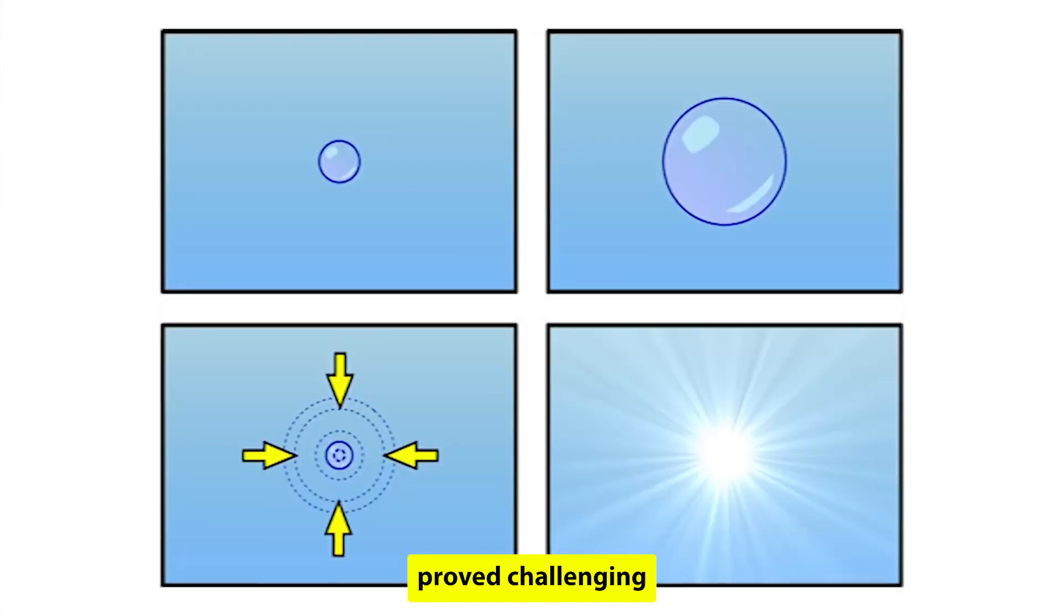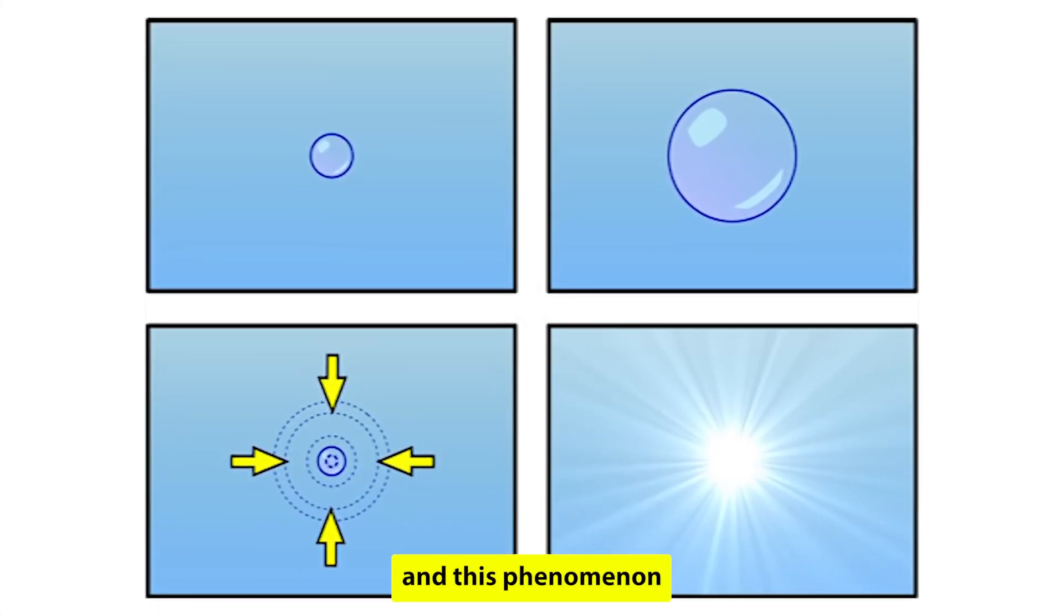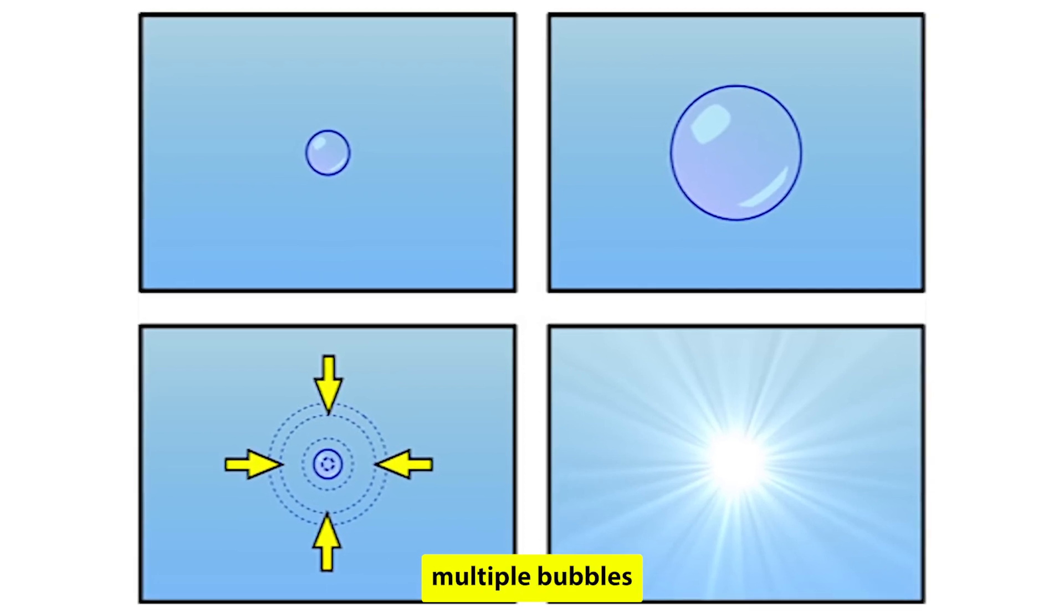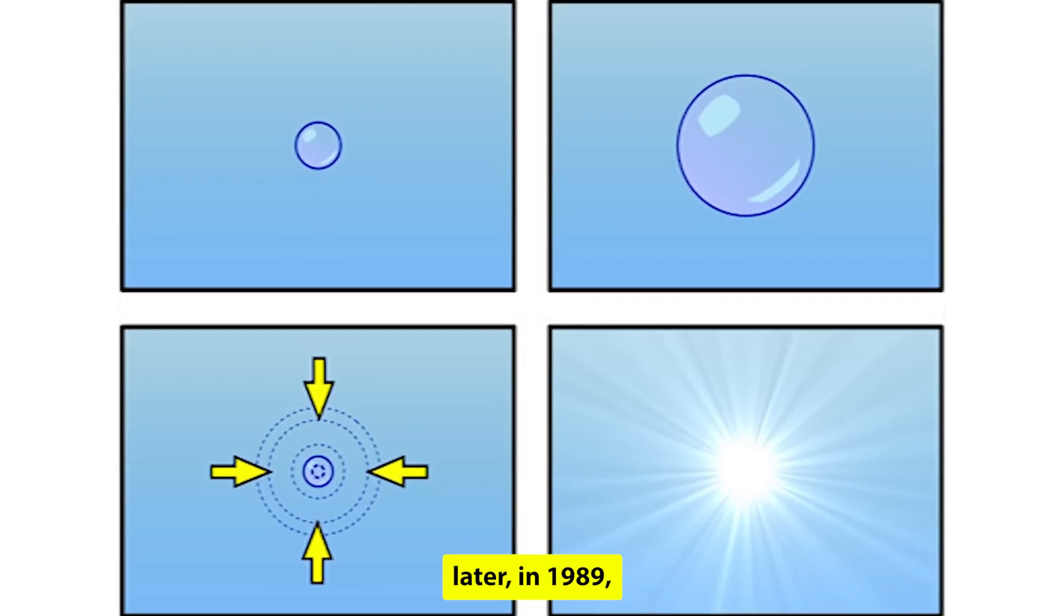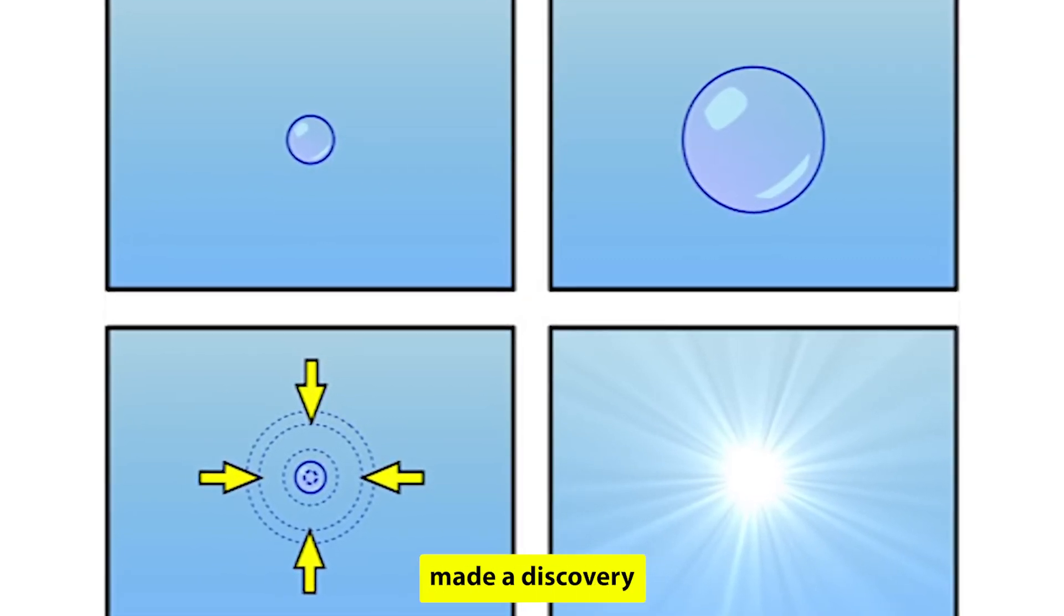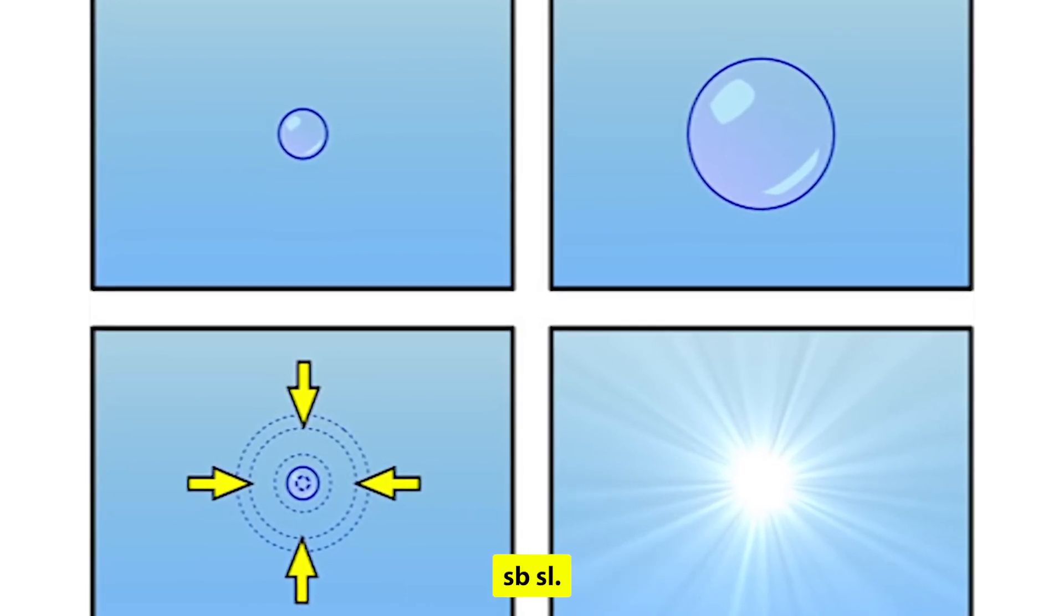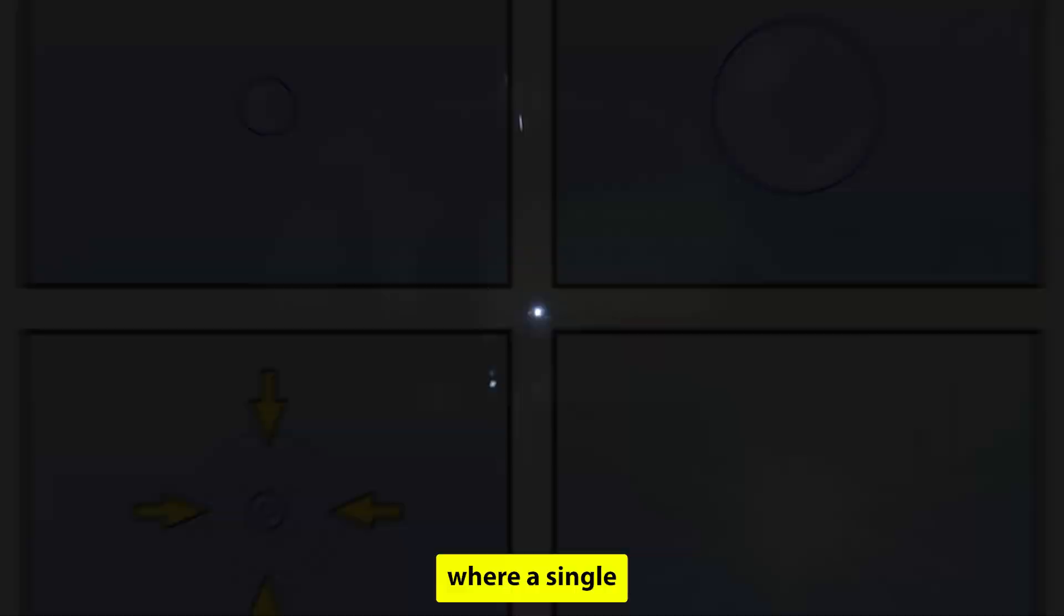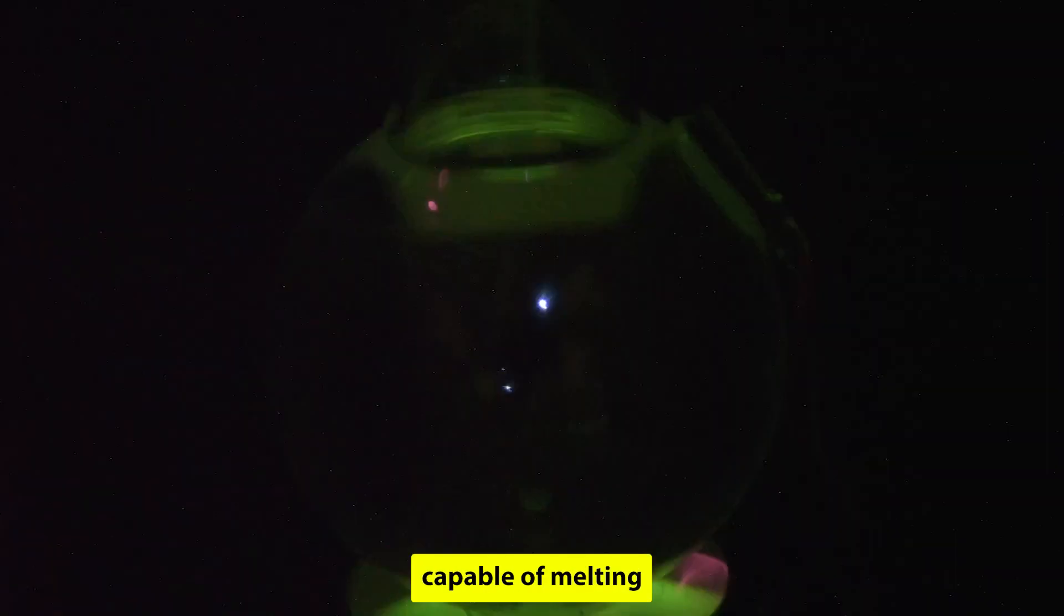Initial analysis proved challenging due to the intricate nature of numerous short-lived bubbles, and this phenomenon is now termed multi-bubble sonoluminescence. Over 50 years later, in 1989, Felipe Gaetan and Lawrence Crum made a discovery, achieving single-bubble sonoluminescence. This technique, where a single bubble emits light pulses within an acoustic standing wave, simplified the study of this phenomenon, revealing the bubble's extreme heat, capable of melting steel.